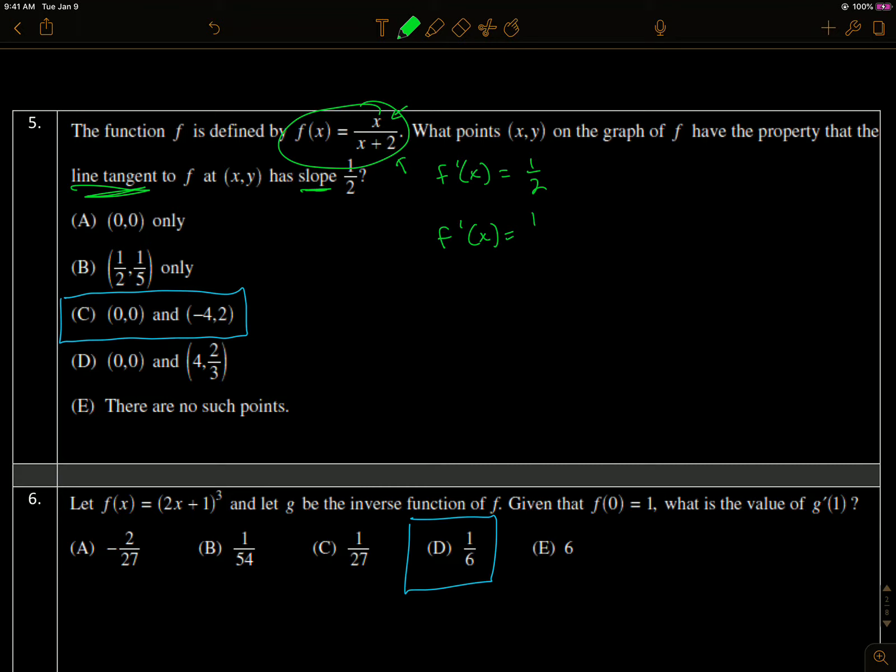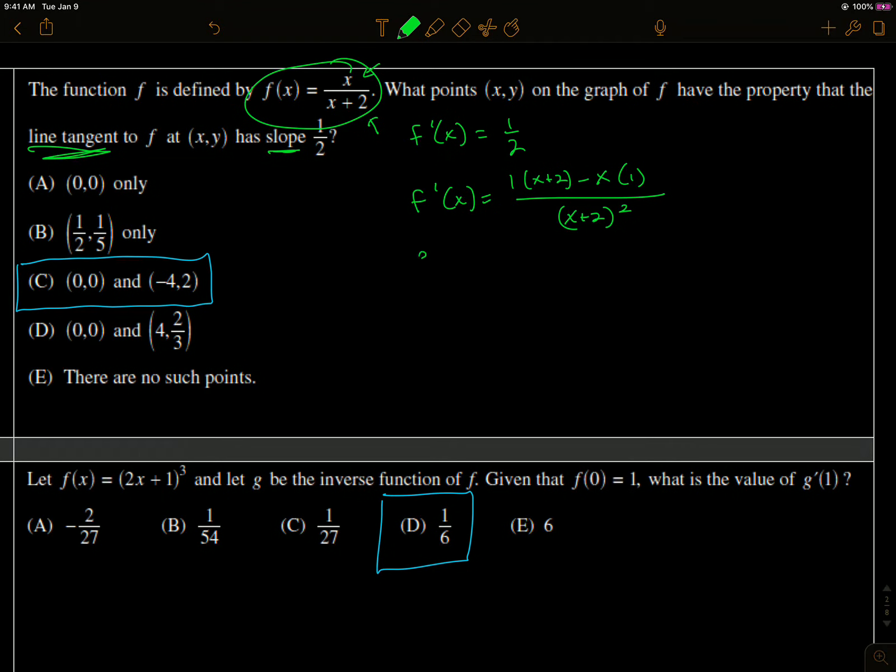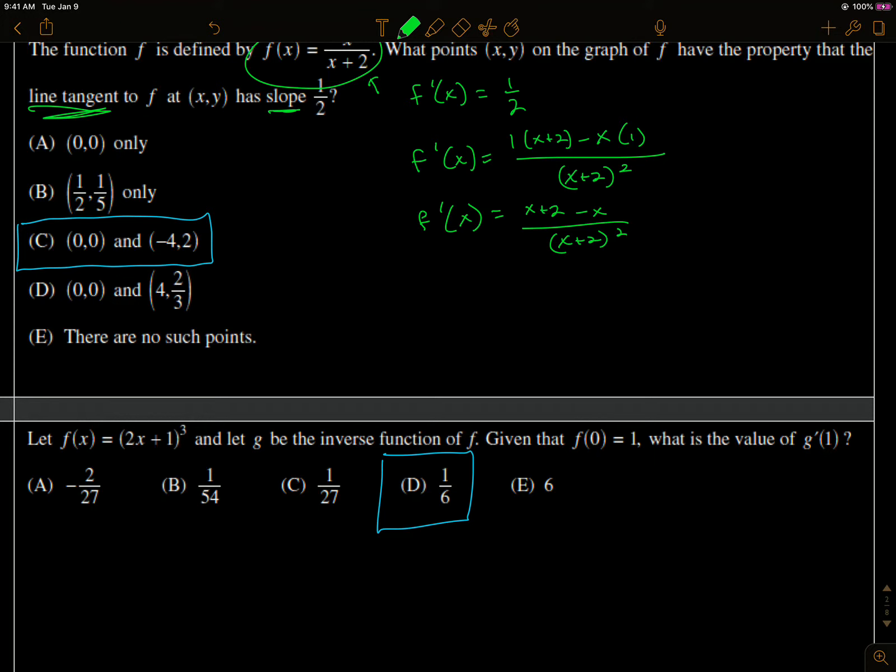The derivative of the numerator times the denominator minus the numerator times the derivative of the denominator all over the denominator squared. So I'm going to simplify. x plus 2 minus x in the numerator, x plus 2 over x plus 2 squared. So now I've got f prime of x equals 2 over x plus 2 squared.